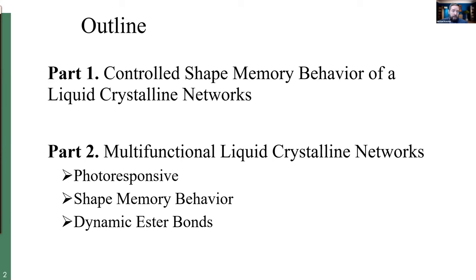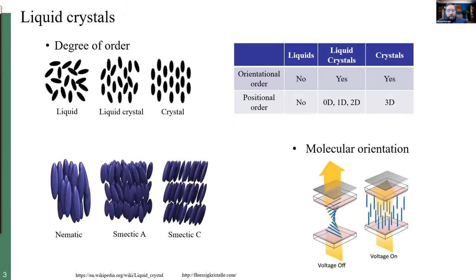First, the shape memory material — but before we go into that, let me give a little background about liquid crystals. Liquid crystals are a phase of material that's something between a liquid and a crystal. The idea of a liquid crystal is something that would have orientational order — where molecules are mostly pointing in the same direction — but not three-dimensional positional order, like a crystal where molecules are arranged in an ordered lattice.